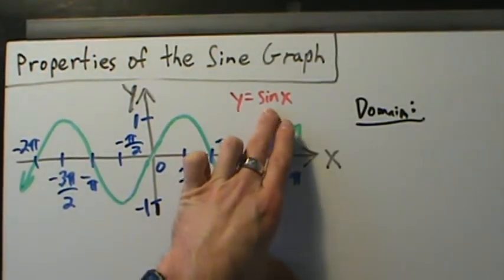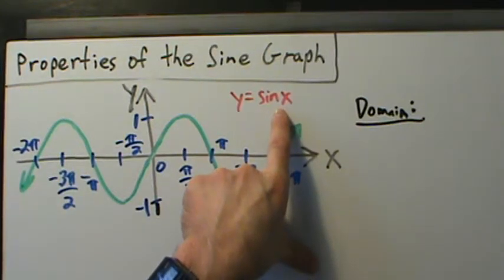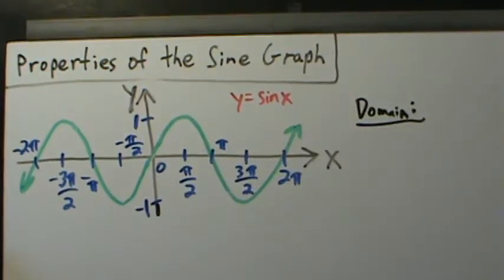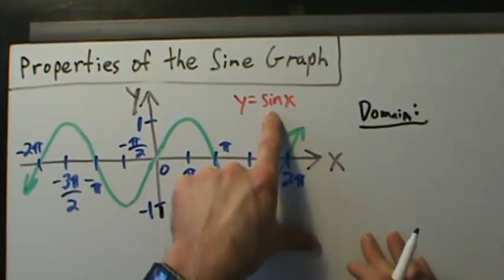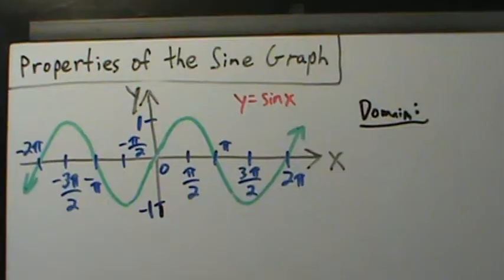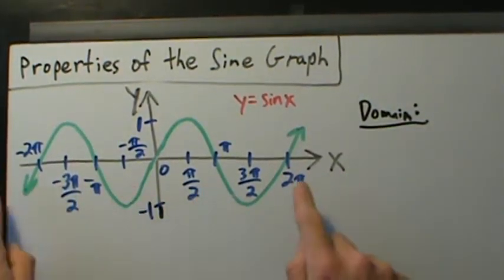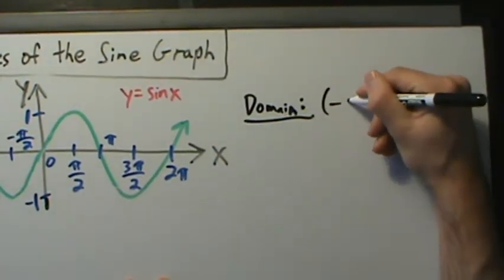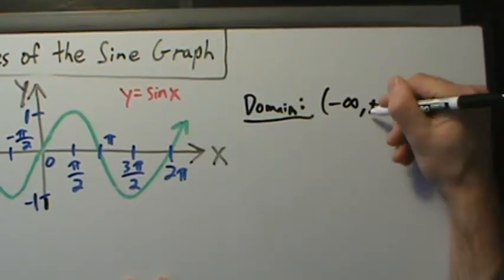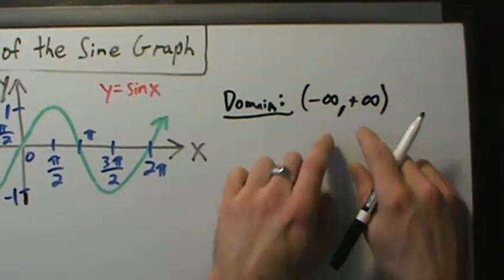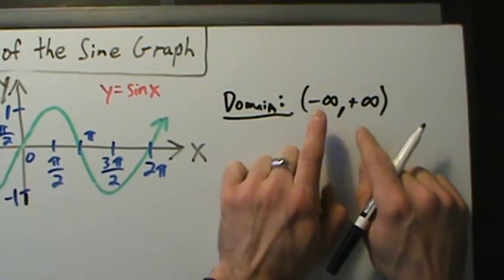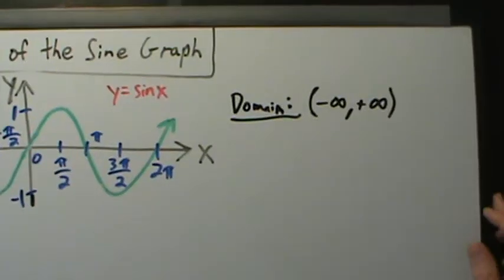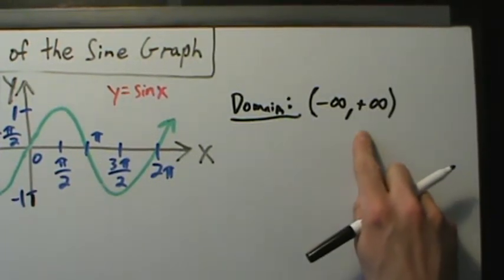So if we say y equals sine of x, what are all the possible values of x — what's everything that we can take a sine of? We can ask ourselves: is there anything we can't take a sine of? The answer is no. For any number you can think of, you can take the sine of it. It doesn't matter how far to the right or left you go — for any x value, you can plug it into y equals sine of x and you'll get a y coordinate back. So the domain is all real numbers, which we write in interval notation as negative infinity to positive infinity.